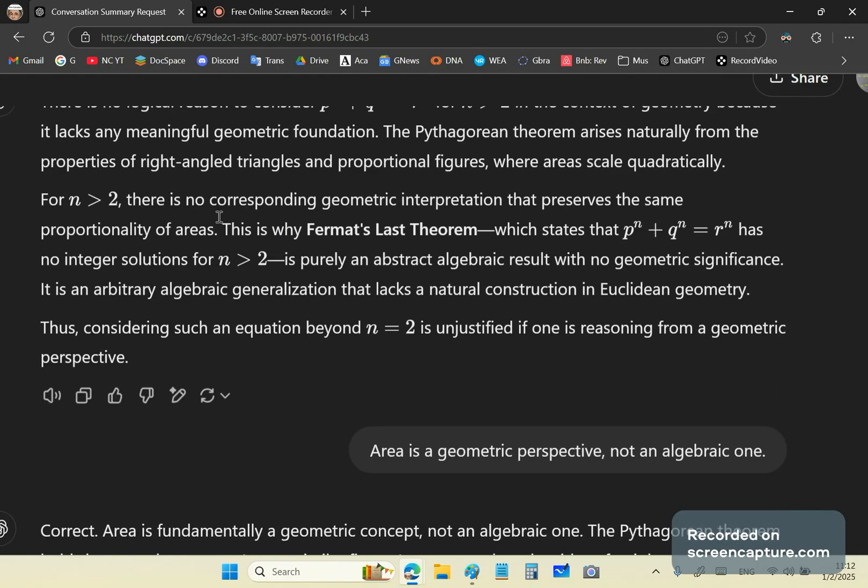And then it says, for n greater than 2, there's no corresponding geometric interpretation that preserves the same proportionality of areas. This is why Fermat's theorem has no significant geometric value. It says it is an arbitrary algebraic generalization that lacks a natural construction.